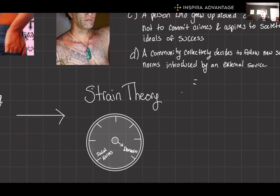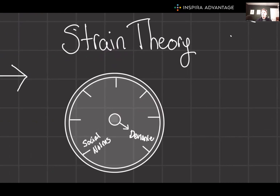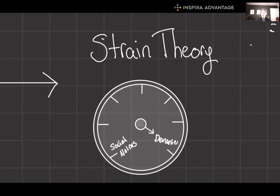Finally, strain theory. This brings a new angle, focusing on the gap between societal goals and the means available to achieve them. Not everyone has access to legitimate means to reach society's success benchmarks, and this discrepancy can lead individuals to adopt deviant methods to fulfill their ambitions. For example, someone from a disadvantaged background might turn to illegal activities as a means of achieving financial success — driven not entirely by moral deficiency, but by structural inequalities. In short, you're straining because you want something but an external factor prevents you from achieving it, so you may commit a crime.